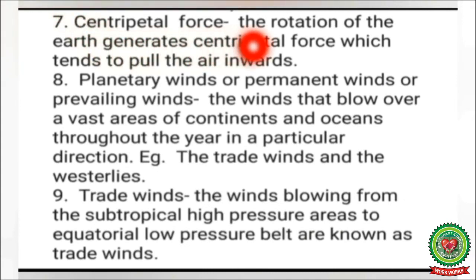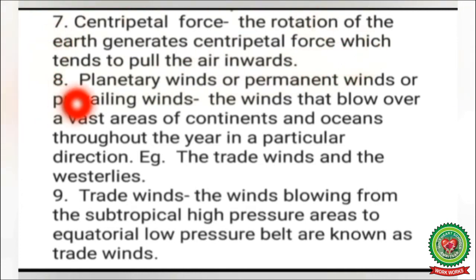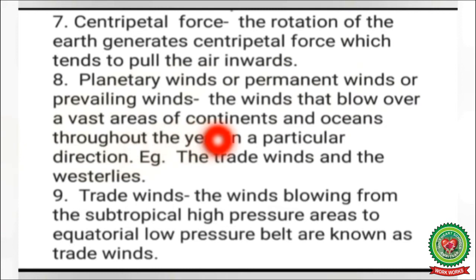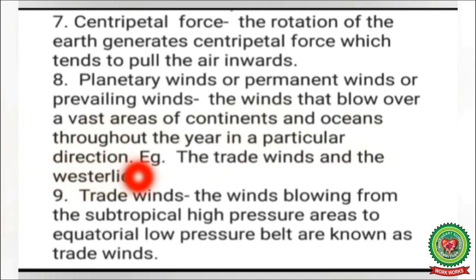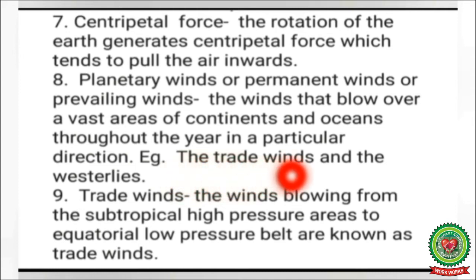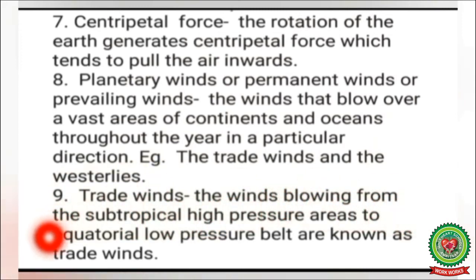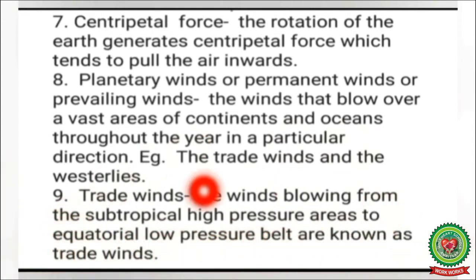Centripetal force - the rotation of the earth generates centripetal force which tends to pull air inwards. Planetary winds or permanent winds or prevailing winds - the winds that blow over vast areas of continents and oceans throughout the year in a particular direction are called planetary winds. Examples are trade winds and the westerlies. Trade winds - the winds blowing from subtropical high pressure areas to the equatorial low pressure belt are known as trade winds.